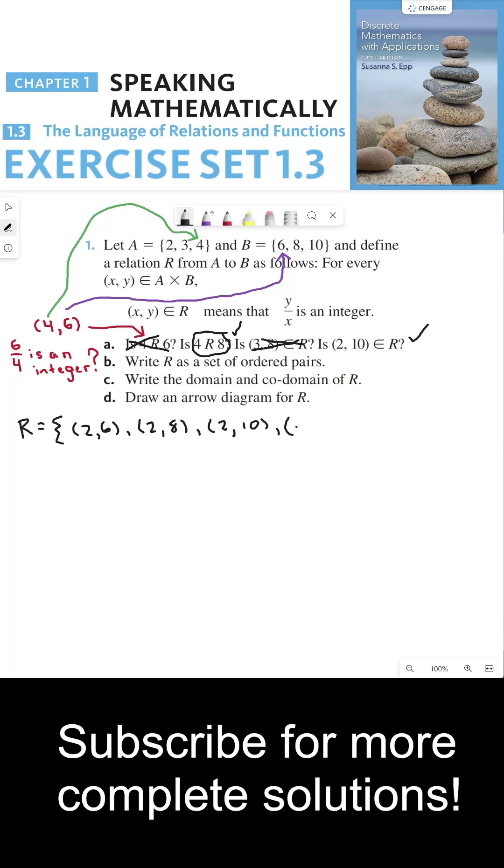If I pick the first element to be 3, there's only one element in set B that is divisible by 3, which is in this case 6. So 6 divided by 3 is an integer. And if I pick 4, there's again only one element in B that I can divide by 4 to get an integer, and that's 8. But these are the only ordered pairs in my relation R. That's the answer to part B.